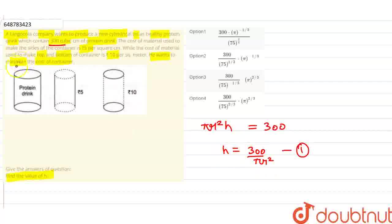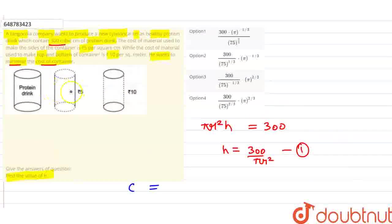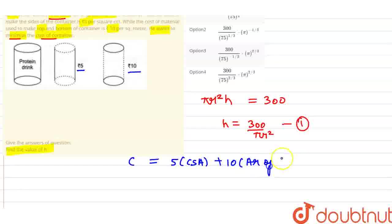Now I have to minimize the cost, so first I will write the cost function C. The cost for the sides is 5, and the cost for the top and bottom is 10. So the cost function is: C = 5 × (curved surface area of cylinder) + 10 × (area of top plus bottom).